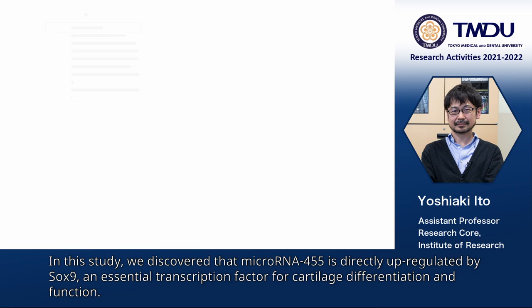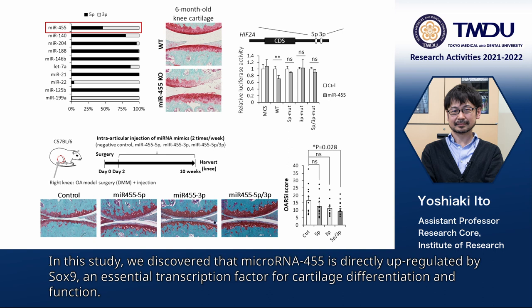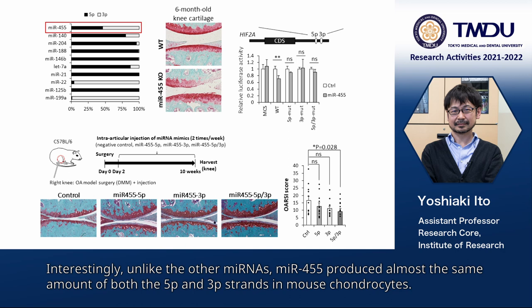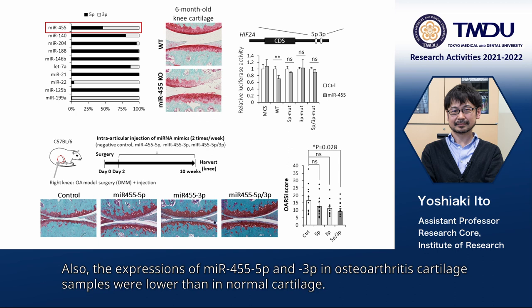In this study, we discovered that microRNA-455 is directly upregulated by SOX9, an essential transcription factor for cartilage differentiation and function. Interestingly, unlike other microRNAs, MIR-455 produced almost the same amount of both 5P and 3P strands in mouse chondrocytes.